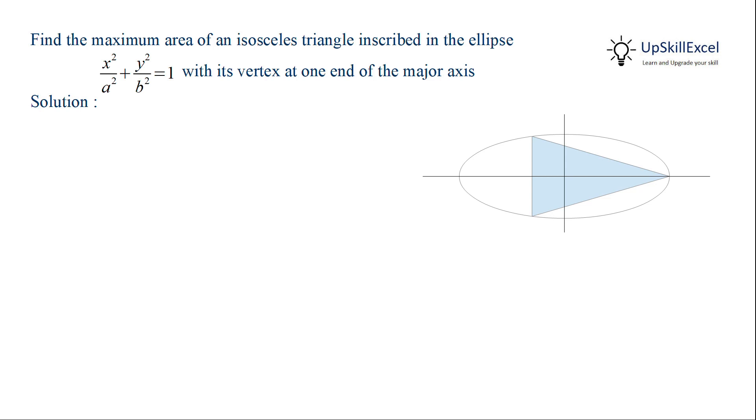Find the maximum area of an isosceles triangle inscribed inside the ellipse x²/a² + y²/b² = 1 with one of the vertices of the triangle lying at the end of the major axis as shown in the figure. Let a > b, therefore x-axis will be major axis.